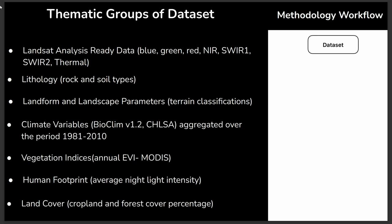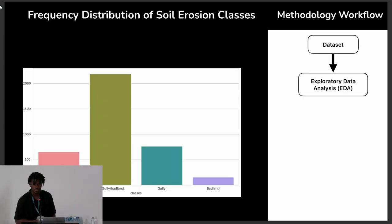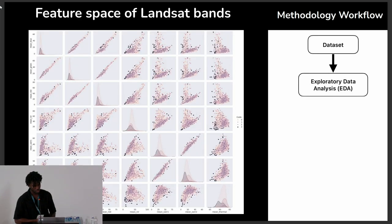While working on this paper, we worked with different sorts of datasets: analysis-ready Landsat data, a lot of climatic variables, and vegetation indices. We first looked at the distribution of the target variable we were trying to predict, and as you can see it's an imbalanced dataset, which led us to more exploratory analysis. This feature space plots different band values against each other, showing Landsat bands ranging from RGB to thermal bands, to help identify which bands are more important for mapping soil erosion classes.